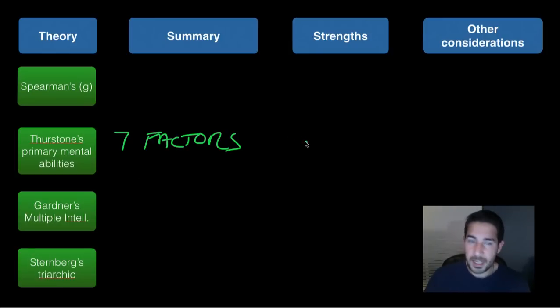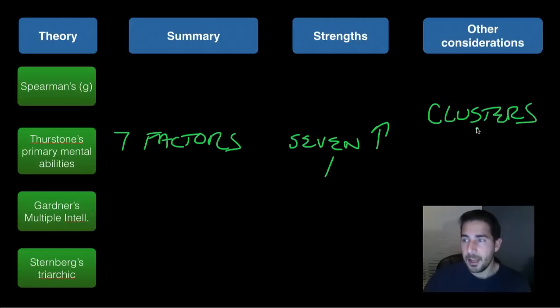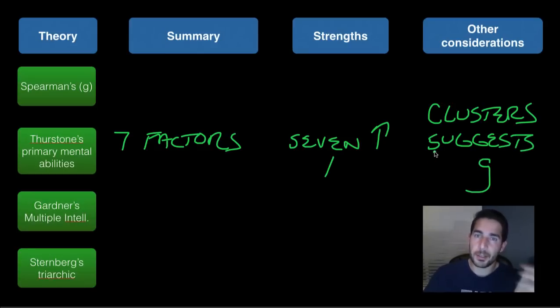A strength is that seven is better than one, right? So seven is better than one Spearman G-factor. So that's a good thing about Thurston's. But the other consideration is that even with seven, he tends to cluster the results. And then that suggests an underlying G-factor. So his results, even though he broke it up into seven, when you test using his methods, they cluster together. And so you're good at all the things together.